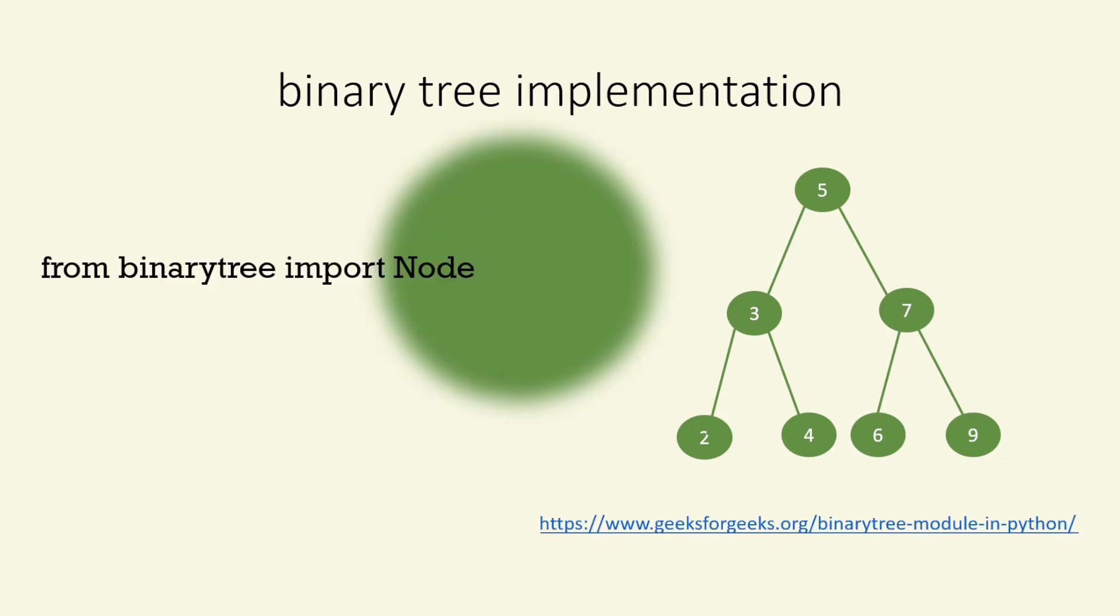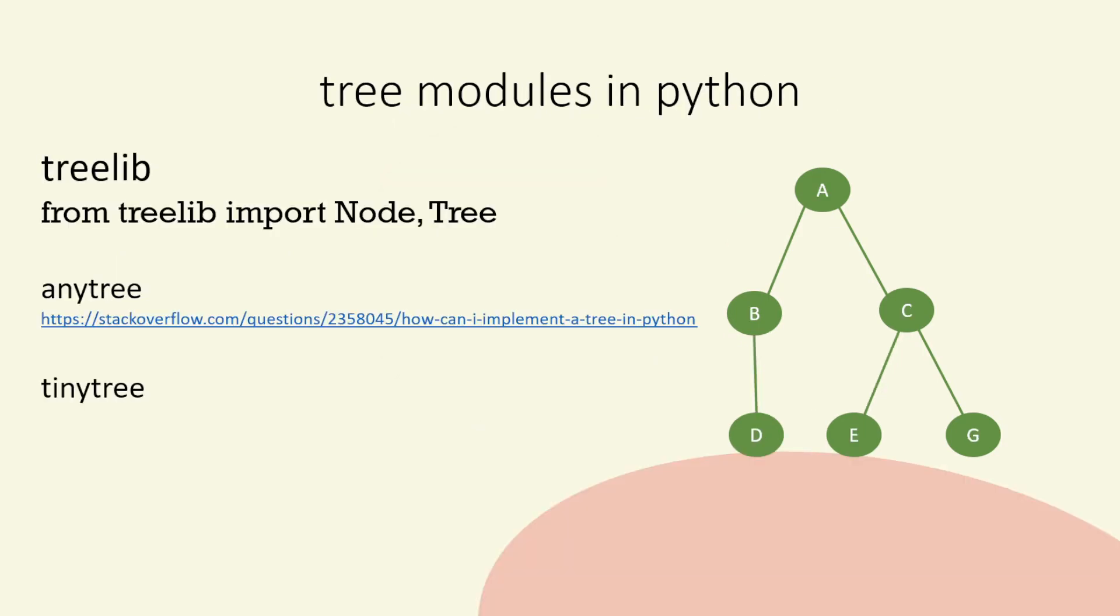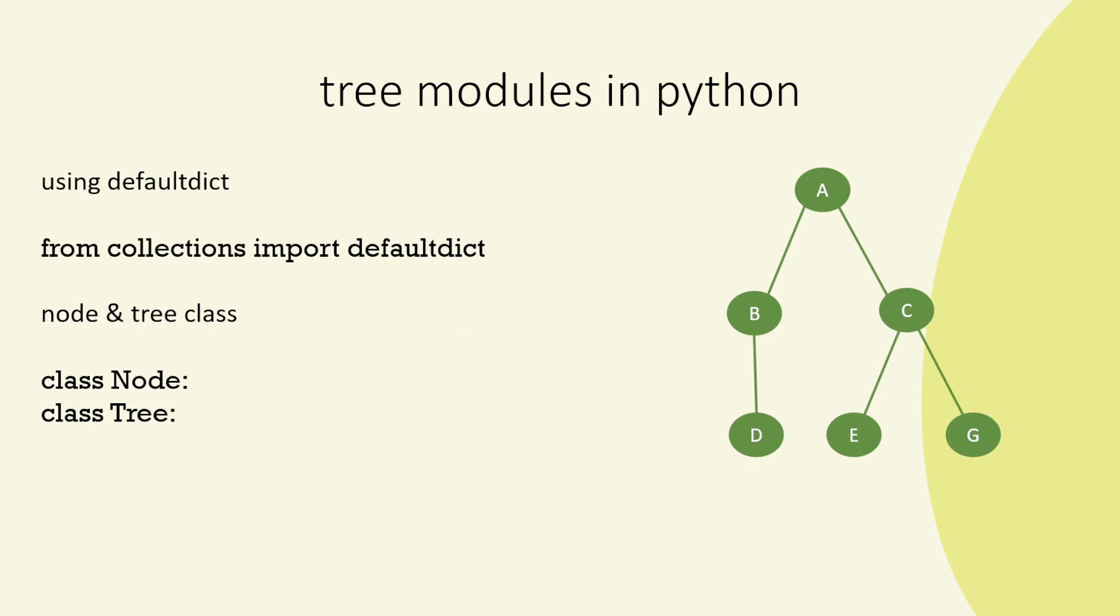And we can use different modules such as binary tree, which is in Python. Other modules involving trees, we can have tree lib, any tree, tiny tree. We can also use a default dictionary from collections. But generally, we're going to use classes. So we have class node and class tree. So objects are often the approach we have for implementing a tree.